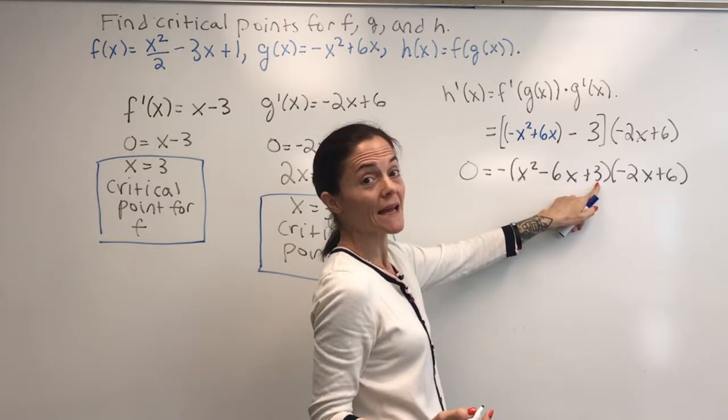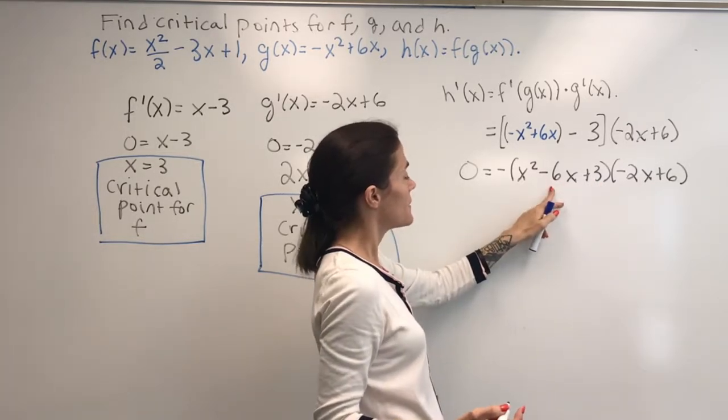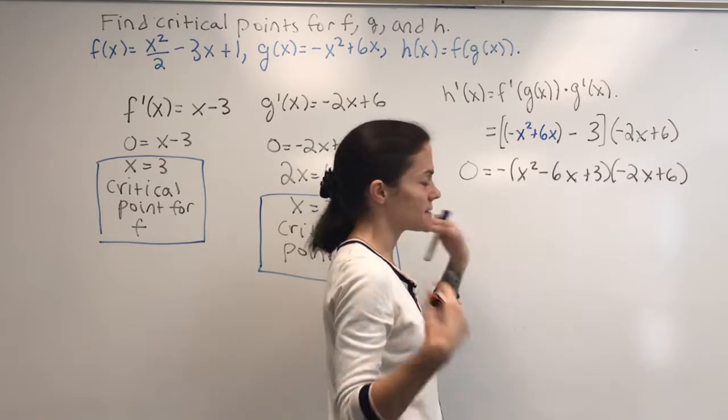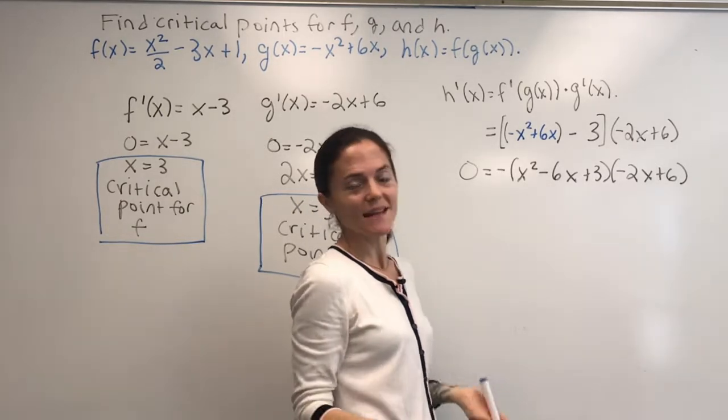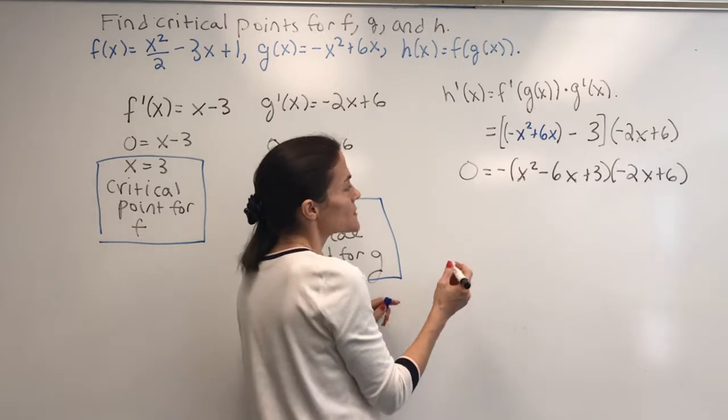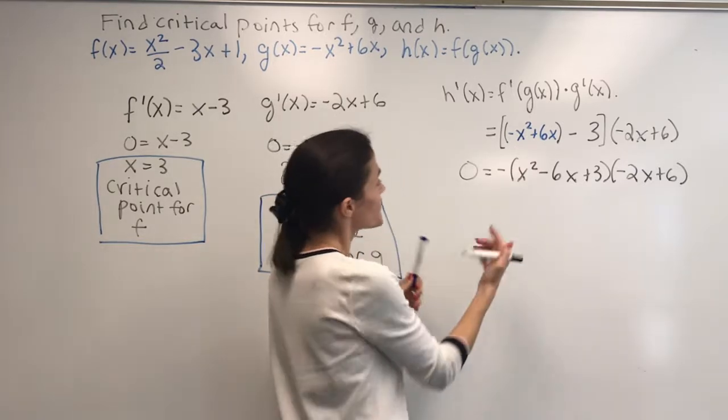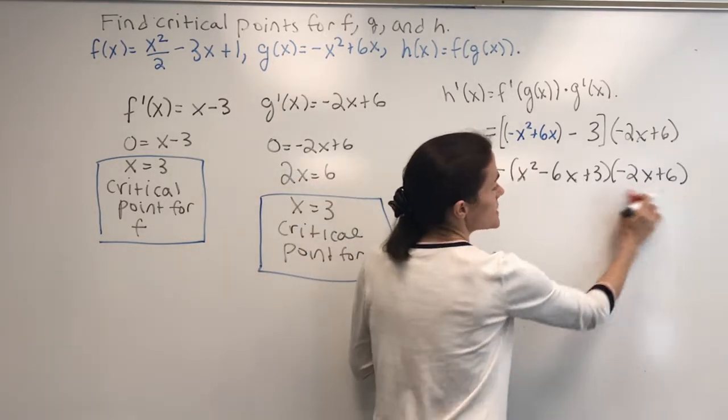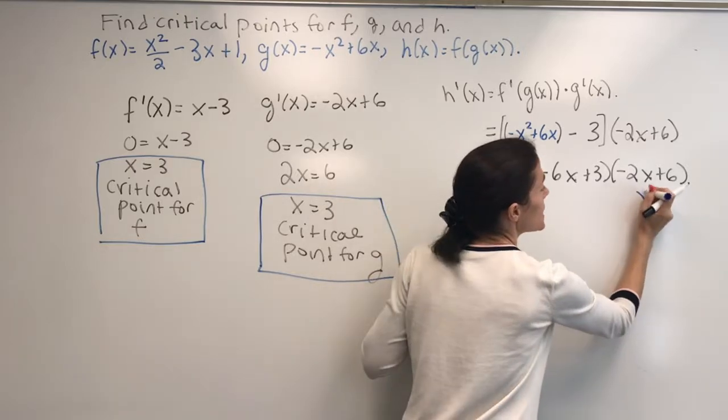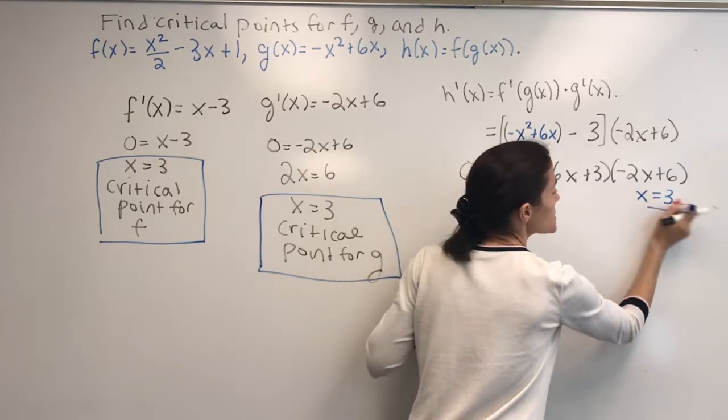One or two things that multiply to 3 and add to minus 6. I can't think of integers, at least, that would factor, so I will use the quadratic formula. Well, first of all, one solution is here. x equals 3 is one solution.